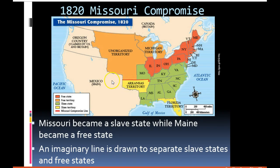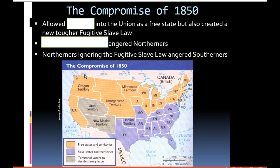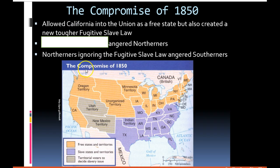That was in 1820, but fast-forward 30 years and there's going to be a problem. The 36°30' line goes west, and California wants to come into the Union as a free state in 1850. The problem is that imaginary line from the Missouri Compromise goes right through the middle of California. Do we split California in half? California really wanted to be a free state, and so the Compromise of 1850 was struck.